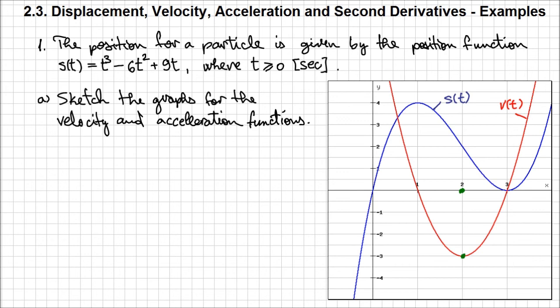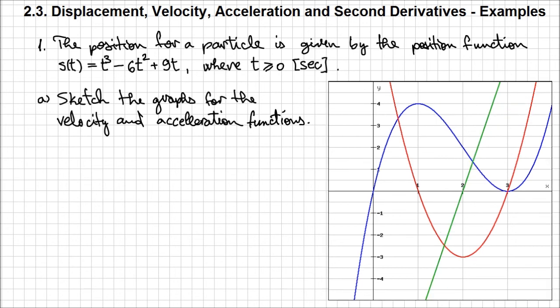We need to determine on the intervals from minus infinity to 2 and from 2 to infinity what happens to the rate of change of the velocity function. From minus infinity to 2, the slope of the tangent to v(t) is always negative, meaning the acceleration function is a line below the x-axis. For time values above 2 seconds, the slope of the tangent to v(t) is always positive, so the acceleration is always positive. This gives a linear function that intersects the t-axis at t = 2. Before t = 2 the acceleration is negative; above t = 2 it is positive. These are your s(t), v(t), and a(t) — the position, velocity, and acceleration functions.